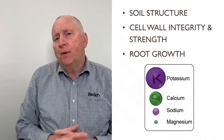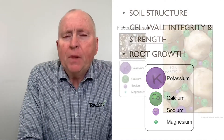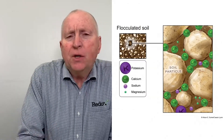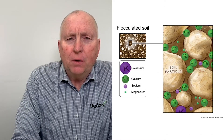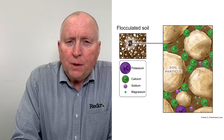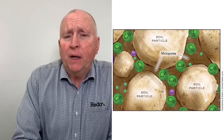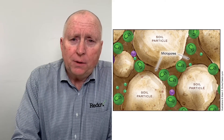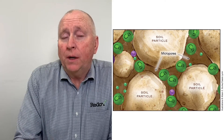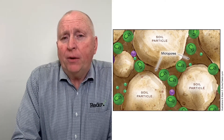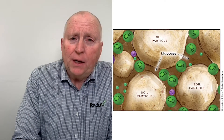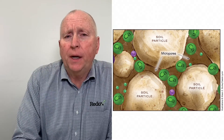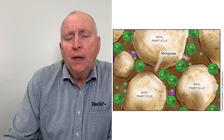Let's talk about the first key function of calcium, and that is its role in the soil for soil structure. The soil has a net negative charge. The soil colloids hold and attract elements with a positive charge, one of those being calcium. Calcium is what is called a divalent cation — it has two positive charges. So it attaches to one soil colloid, attaches to another, draws them together. This is what we call flocculation, which improves the structure of the soil and the quality and quantity of the micropore space in the soil.